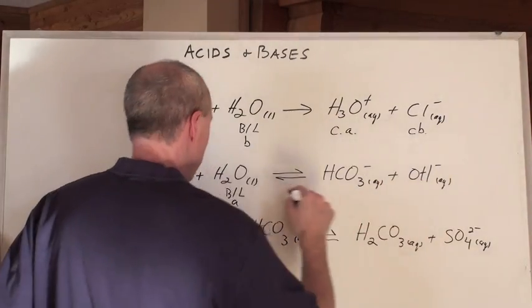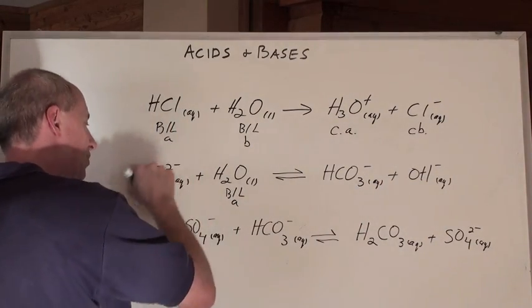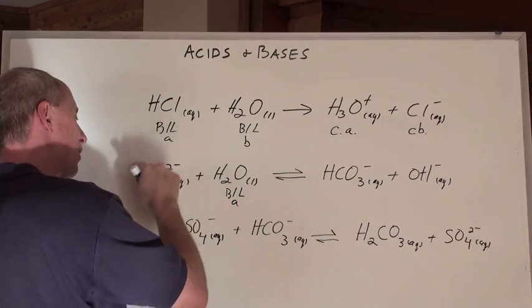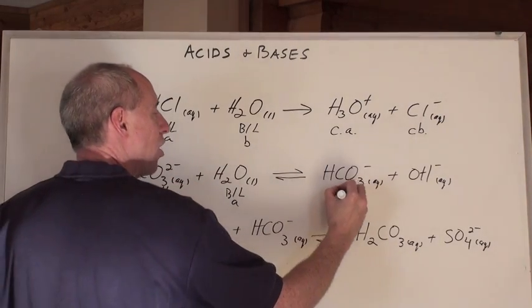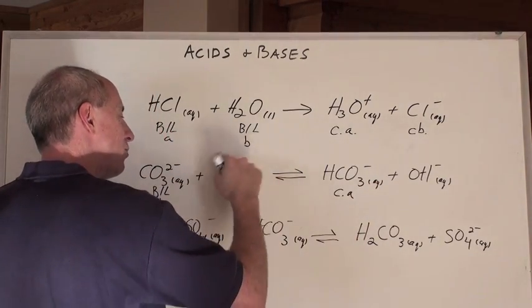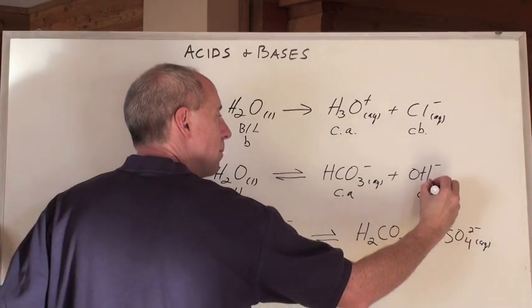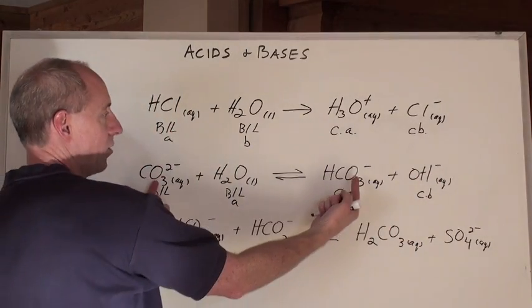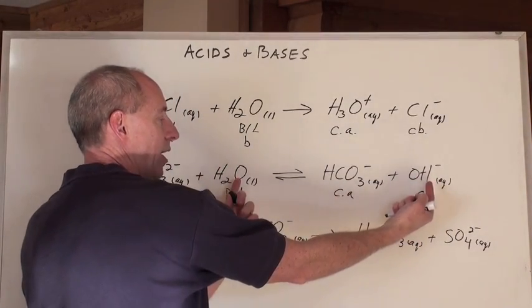This makes this, of course, because, well, this species right here, let's go back. This species right here, the Bronsted-Lowry base, has a conjugate acid here, and this Bronsted-Lowry acid has a conjugate base here. Here is a conjugate acid-base pair. Here is a conjugate acid-base pair.